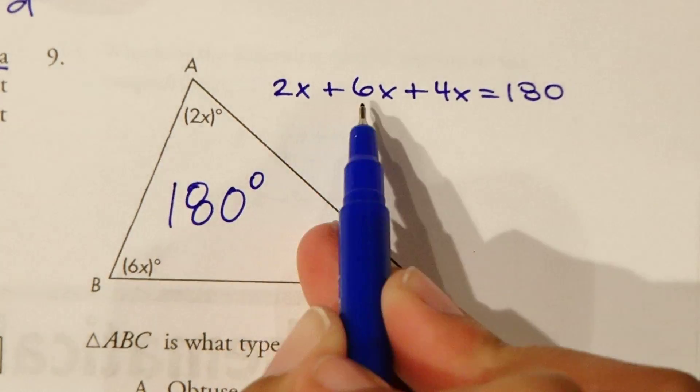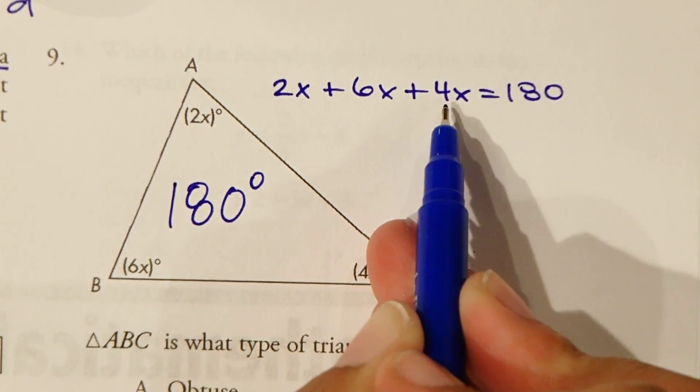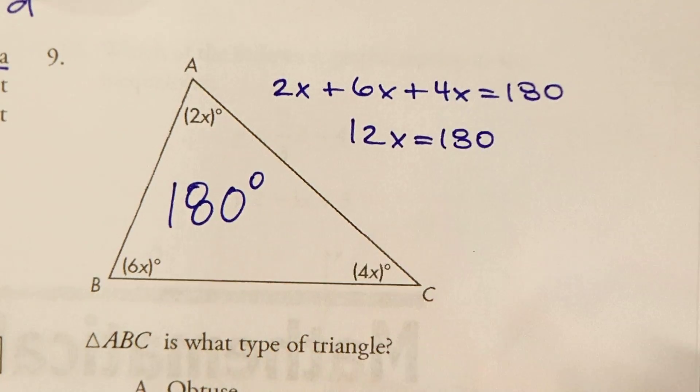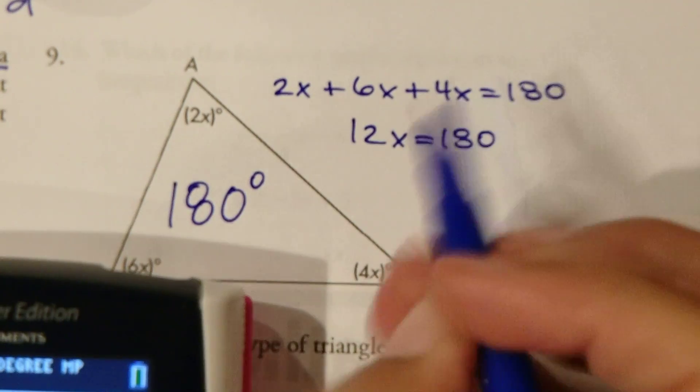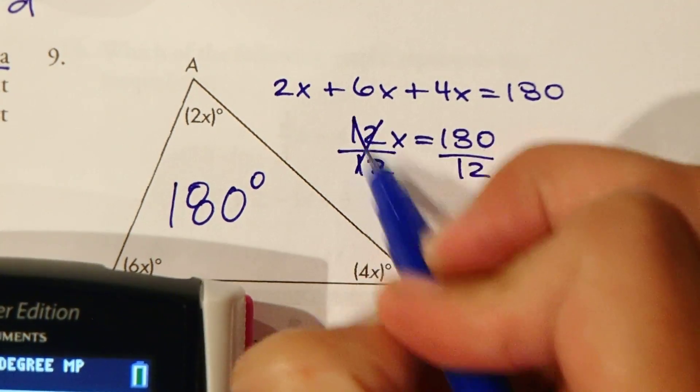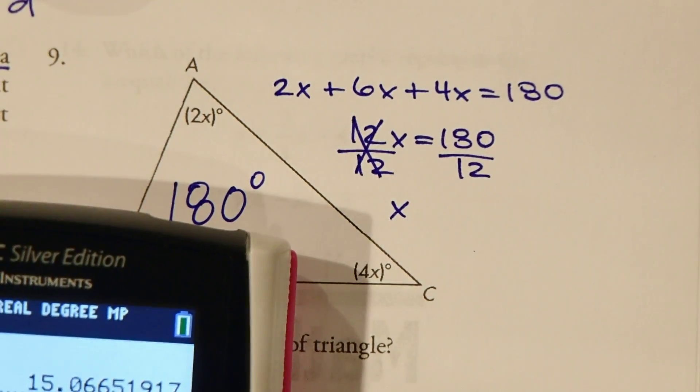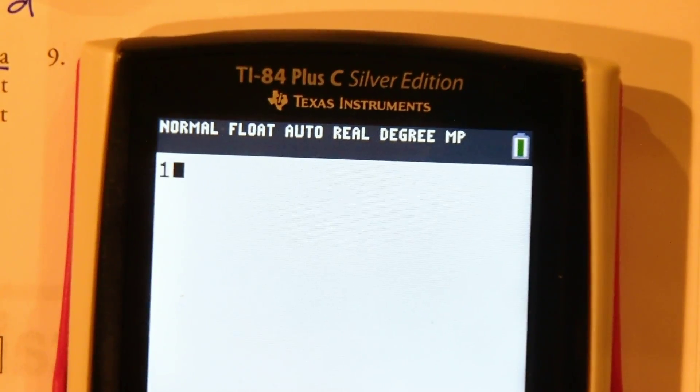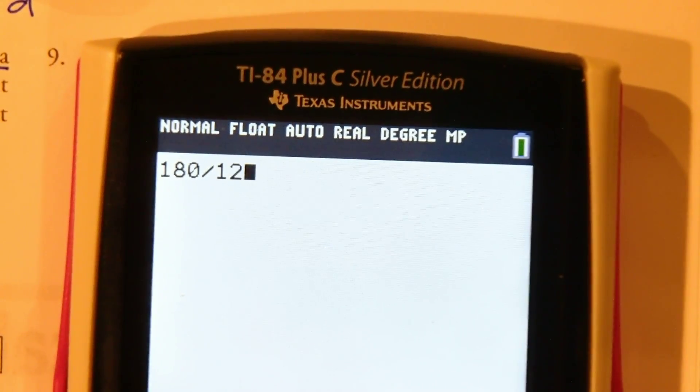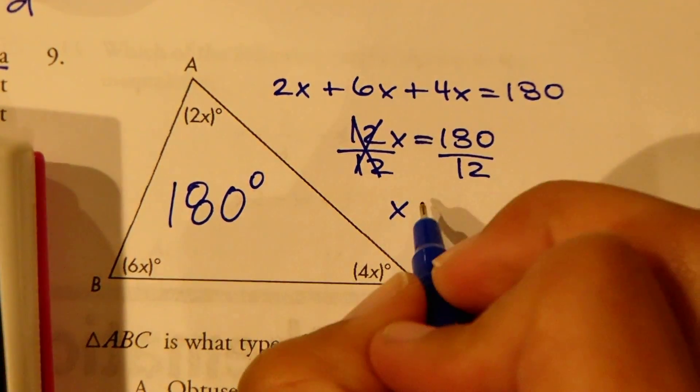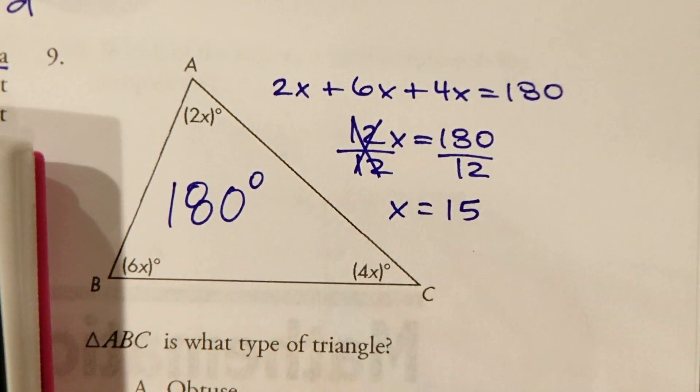So 2x plus 6x plus 4x equals 180. Adding these up, 2 plus 6 is 8, 8 plus 4 is 12. So 12x equals 180. Now we can divide by 12. And let's see what x equals. 180 divided by 12. So our answer is going to be 15. So each one of these values is 15.